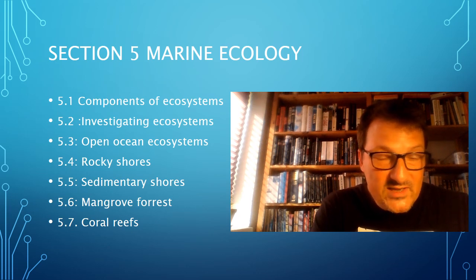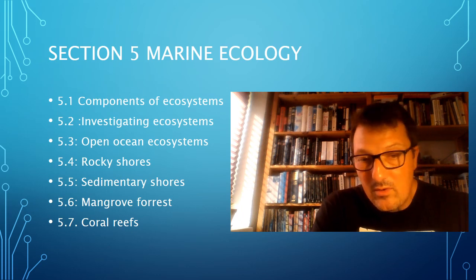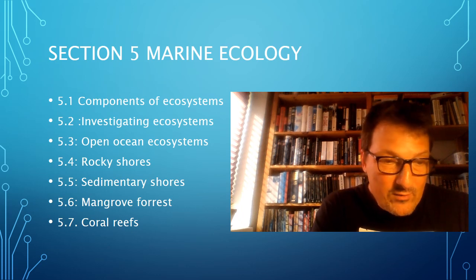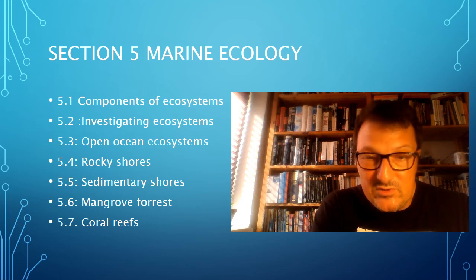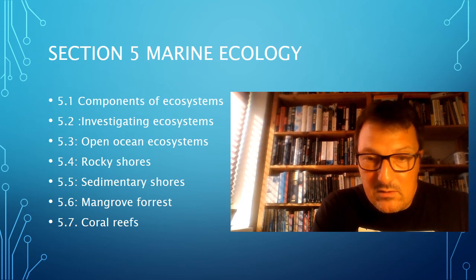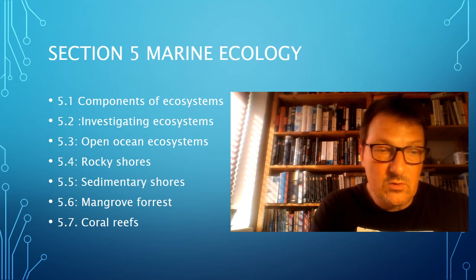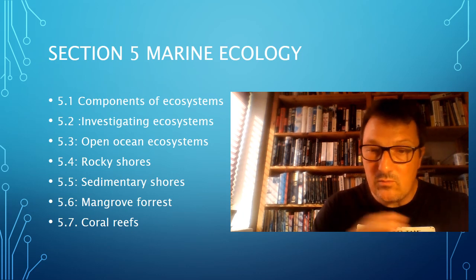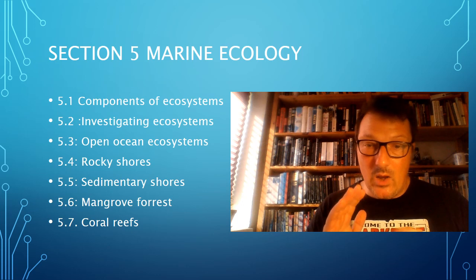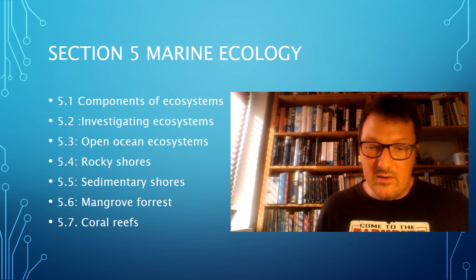5.6 goes into detail about the mangrove forest and how it affects biodiversity, and how animal species adapt to living in the mangrove forest. And 5.7 — here we finally get to Finding Nemo — we are going to look at tropical coral reefs. In each of these sections there's going to be a lot more, but this is just to give you an idea of what the syllabus covers and what we will be learning in the year to come.